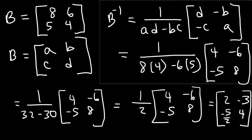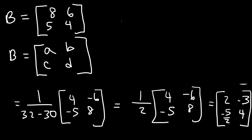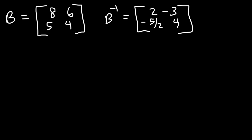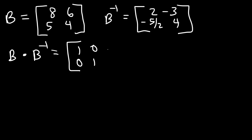So the inverse of matrix B is 2, negative 3, negative 5 over 2, and 4. Now go ahead and confirm that B times the inverse of B equals the multiplicative identity matrix: 1, 0, 0, 1.